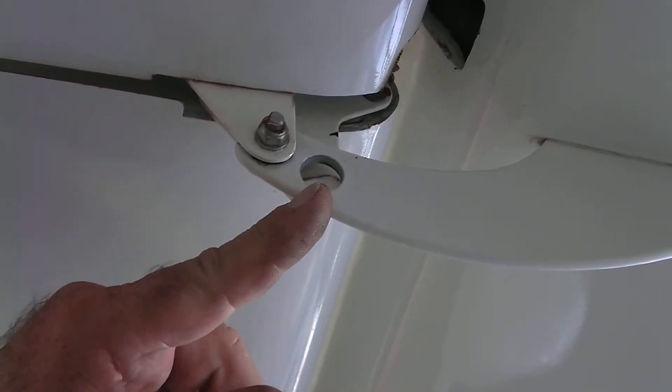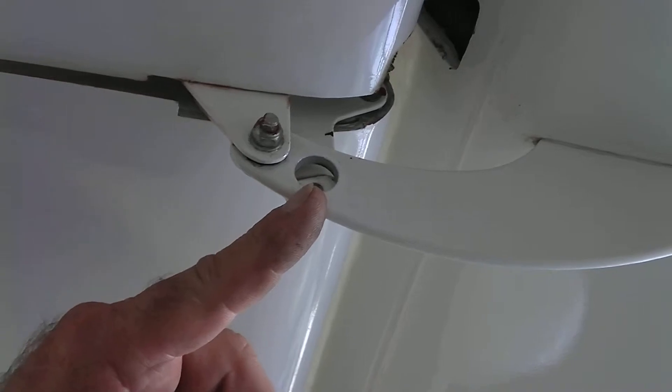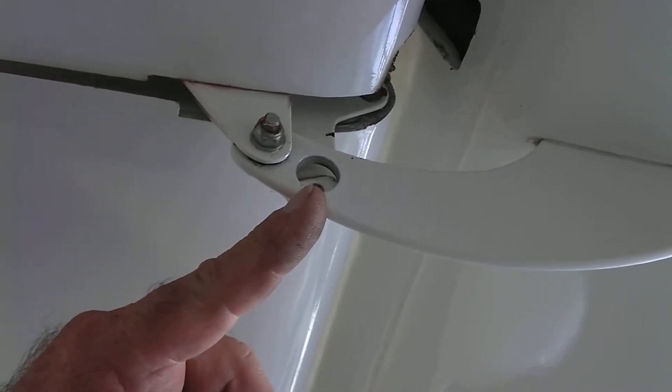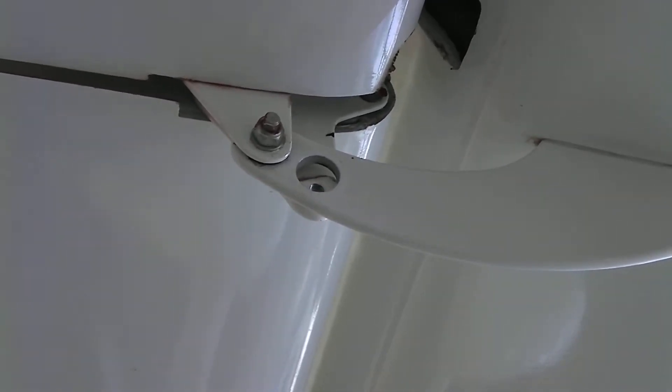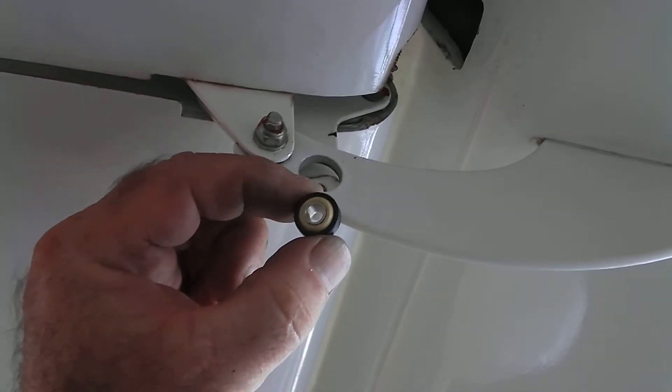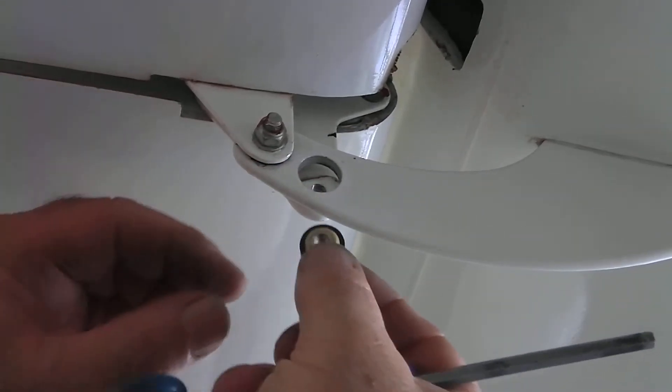The way you check these is by grabbing your flap or your aileron and shoving it left to right fairly hard and looking to see if this little black bearing right here wiggles inside of the unit.